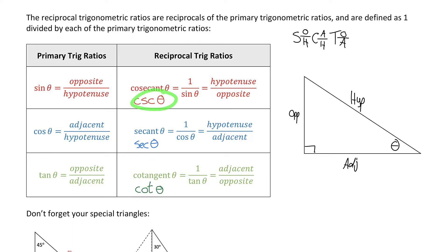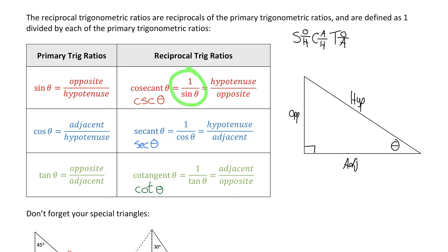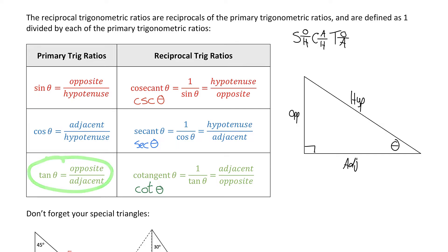Let's look more closely at what cosecant of an angle equals. Cosecant gives a ratio of sides, but it gives the reciprocal ratio of what sine would give. Sine of an angle is opposite over hypotenuse, so cosecant — being the reciprocal of sine — gives hypotenuse divided by opposite. It's 1 divided by sine of theta, the flip of the ratio. Similarly, secant is 1 over cosine, giving hypotenuse over adjacent. And cotangent, the reciprocal of tan, gives adjacent over opposite.